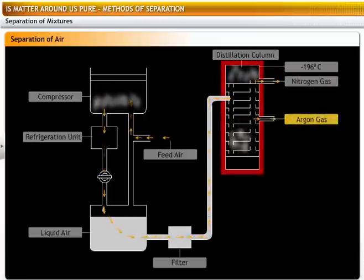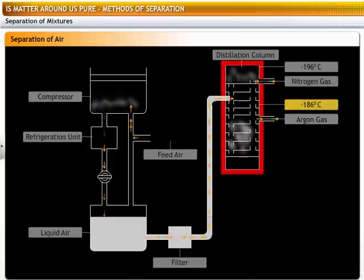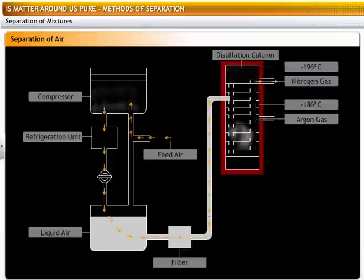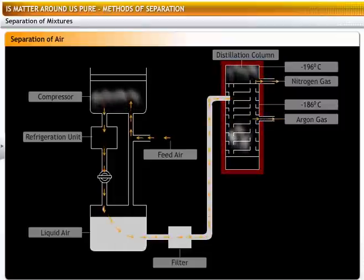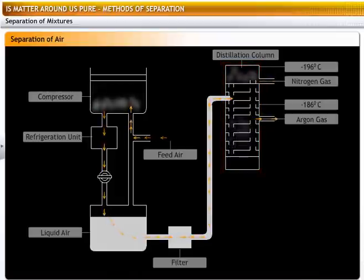Liquid argon has a slightly higher boiling point of minus 186 degrees centigrade. So it boils next. It collects as argon gas in the central part of the fractional distillation column.